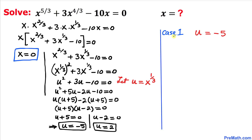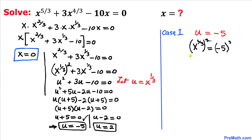For case 1, when u equals negative 5: since u equals x to the power 1 over 3, we have x to the power 1 over 3 equals negative 5. Taking the power of 3 on both sides, the 1/3 and 3 cancel, giving x equals negative 5 cubed, which is negative 125.